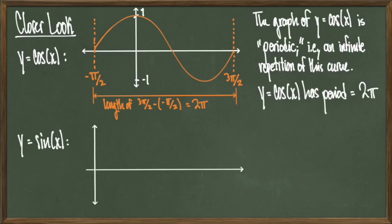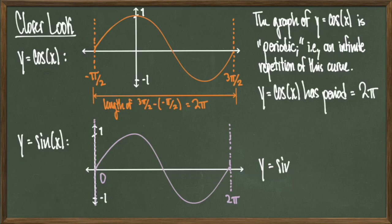If we study y equals sine of x in the same way, we see that exact same shape but sitting in a different spot on the x-axis. Even still, from 0 to 2 pi is where that shape is repeated. Therefore y equals sine of x also has period equal to 2 pi. In the next few slides we'll look at graphs of more trig functions.